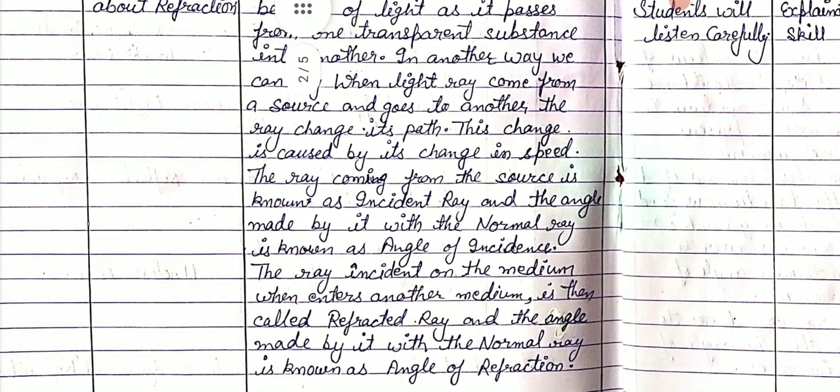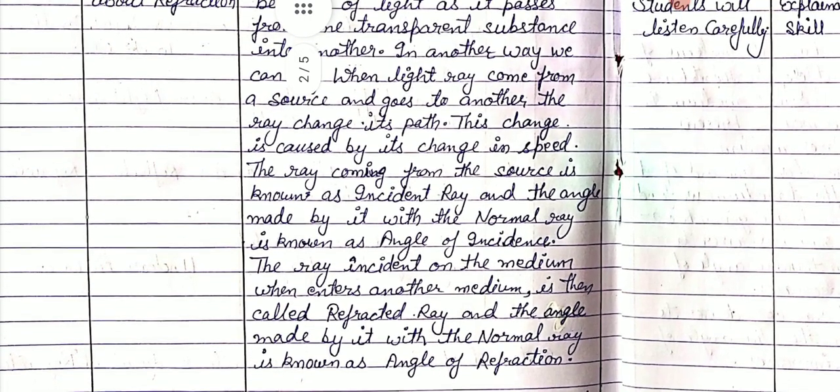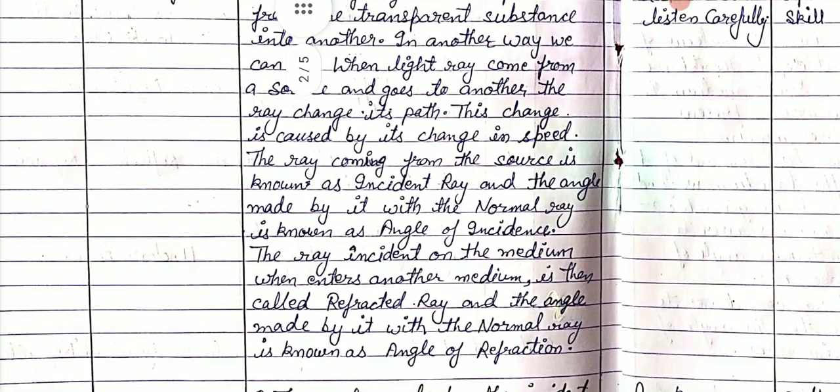The ray coming from the source is known as the incident ray, and the angle made by it with the normal ray is known as the angle of incidence. The ray that enters another medium is then called the refracted ray, and the angle made by it with the normal ray is known as the angle of refraction.